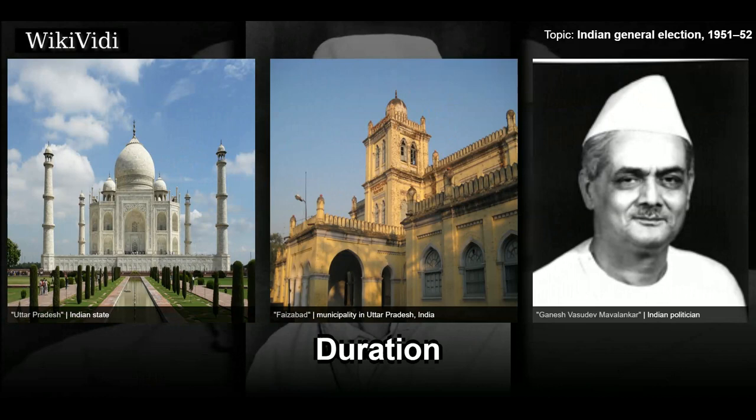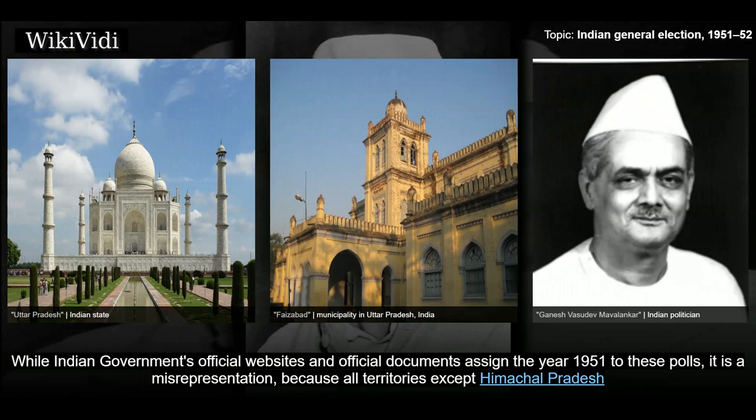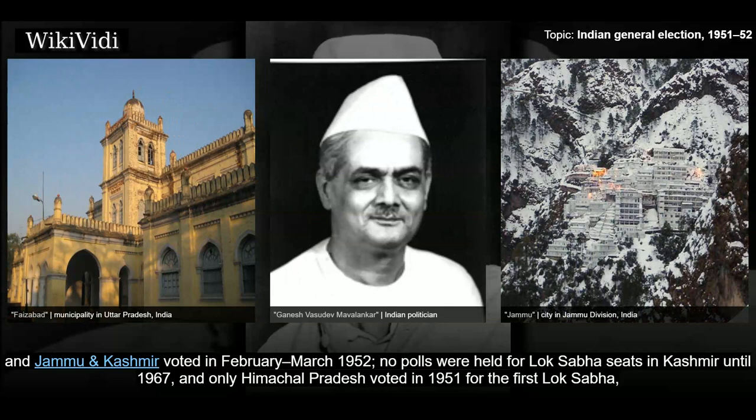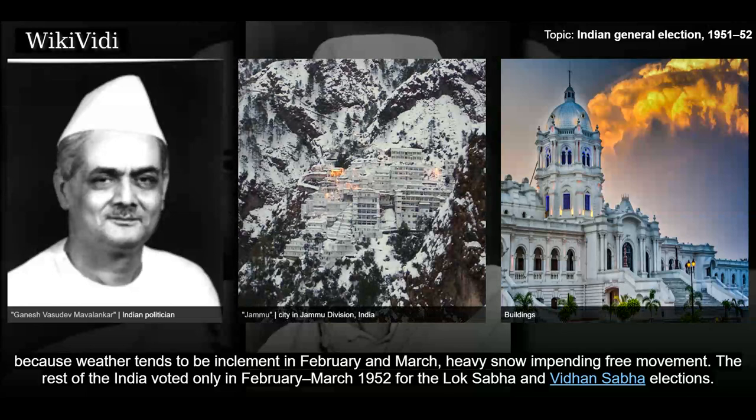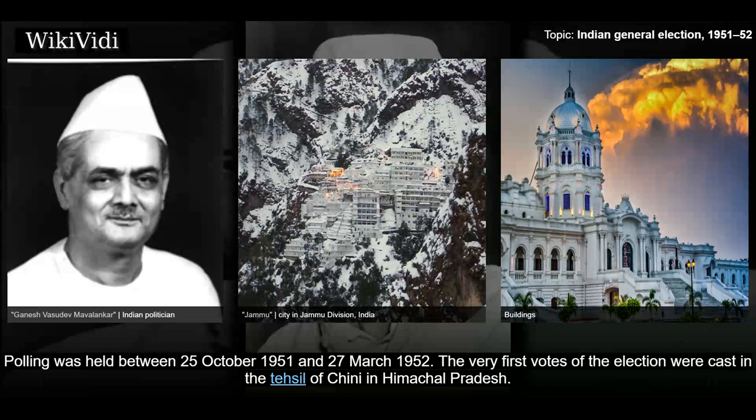Duration. While the Indian government's official websites and official documents assign the year 1951 to these polls, it is a misrepresentation, because all territories except Himachal Pradesh and Jammu and Kashmir voted in February-March 1952. No polls were held for Lok Sabha seats in Kashmir until 1967, and only Himachal Pradesh voted in 1951 for the first Lok Sabha. Because weather tends to be inclement in February and March, with heavy snow impeding free movement, the rest of India voted only in February-March 1952 for the Lok Sabha and the Vidhan Sabha elections. Polling was held between 25 October 1951 and 27 March 1952.